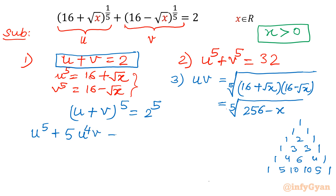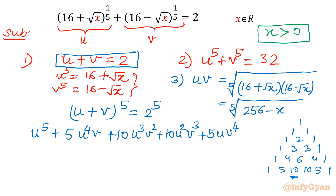Continuing the expansion: 10u³v², then 10u²v³, then 5uv⁴, and finally v⁵. This is our LHS expansion. The RHS is 2⁵ = 32.